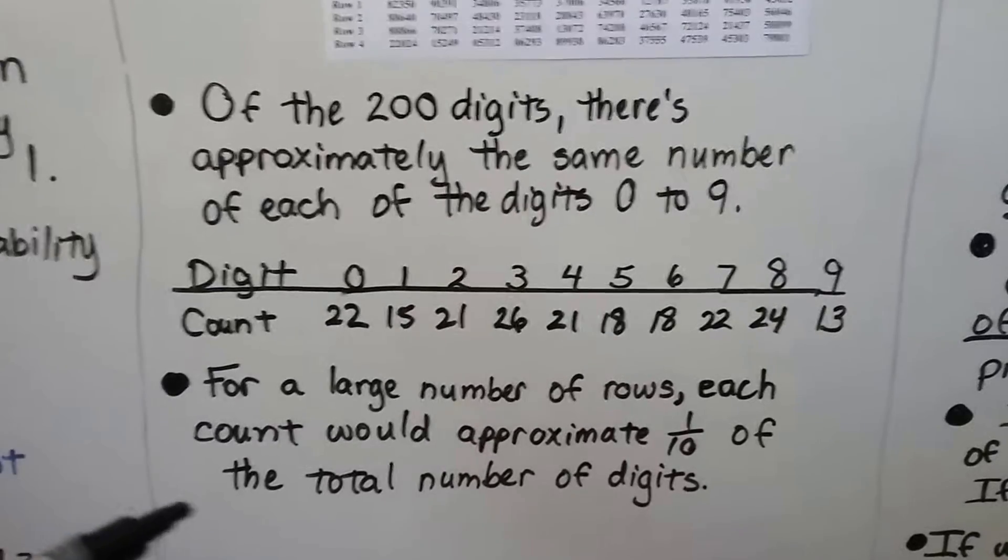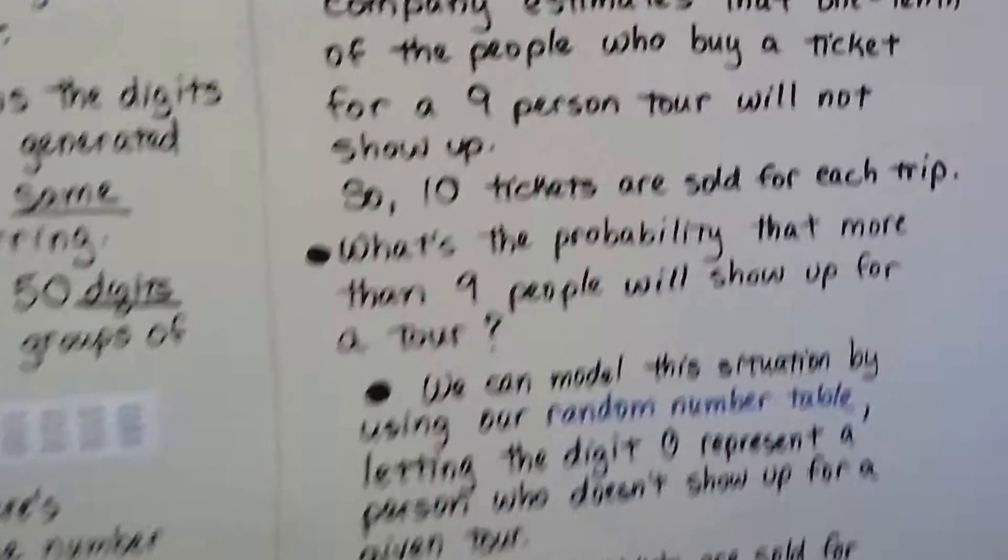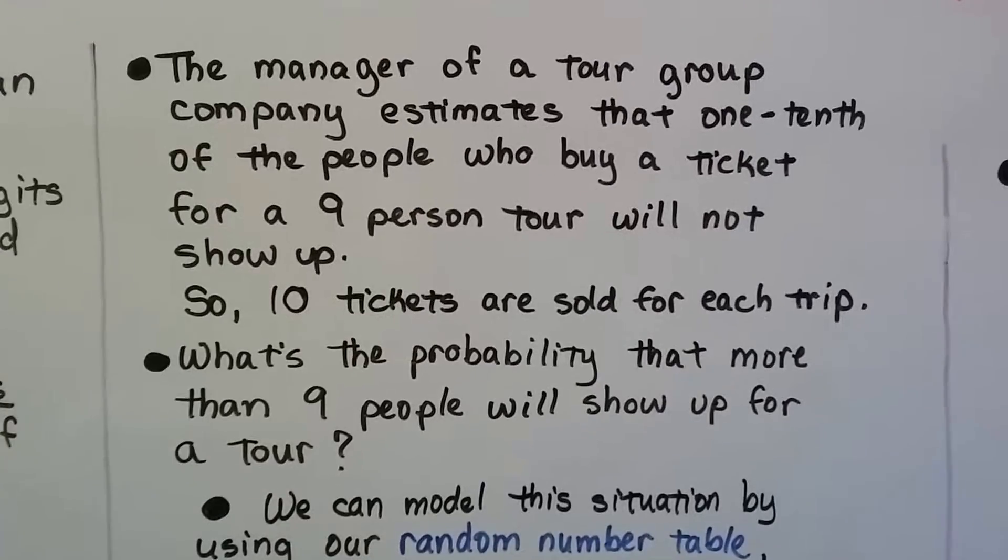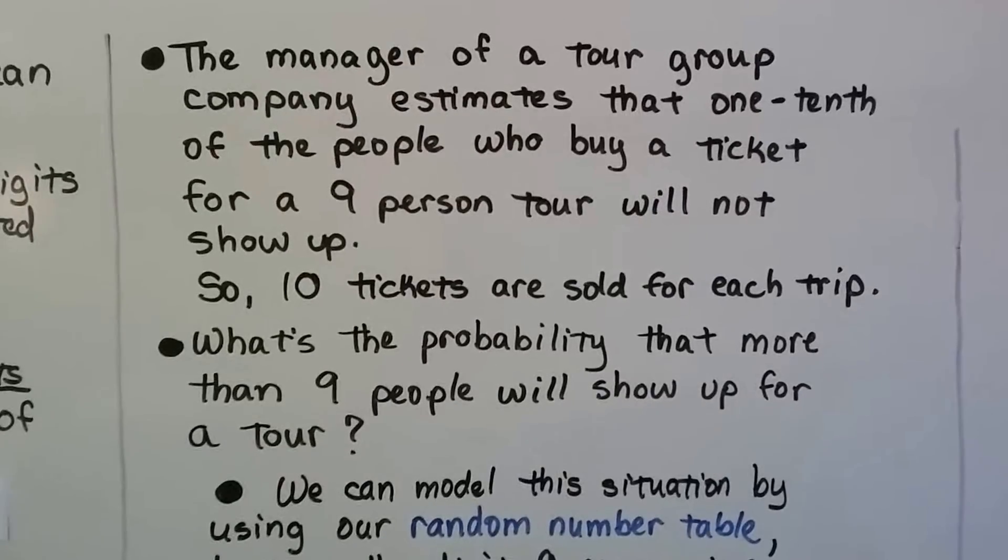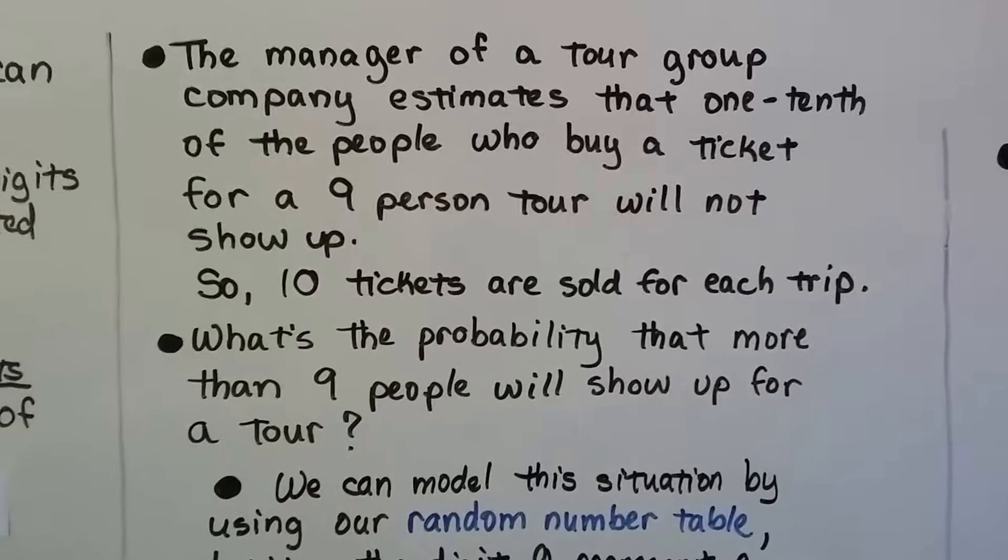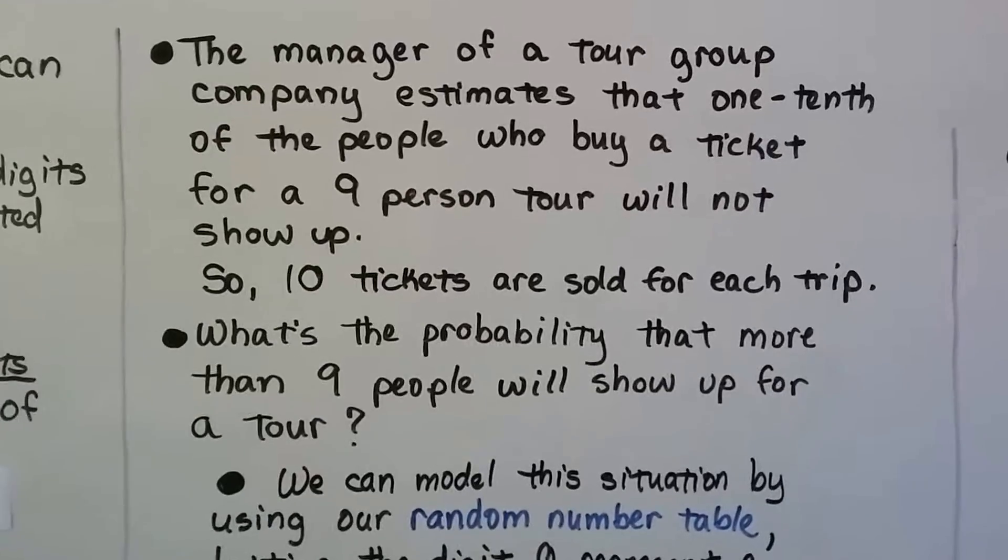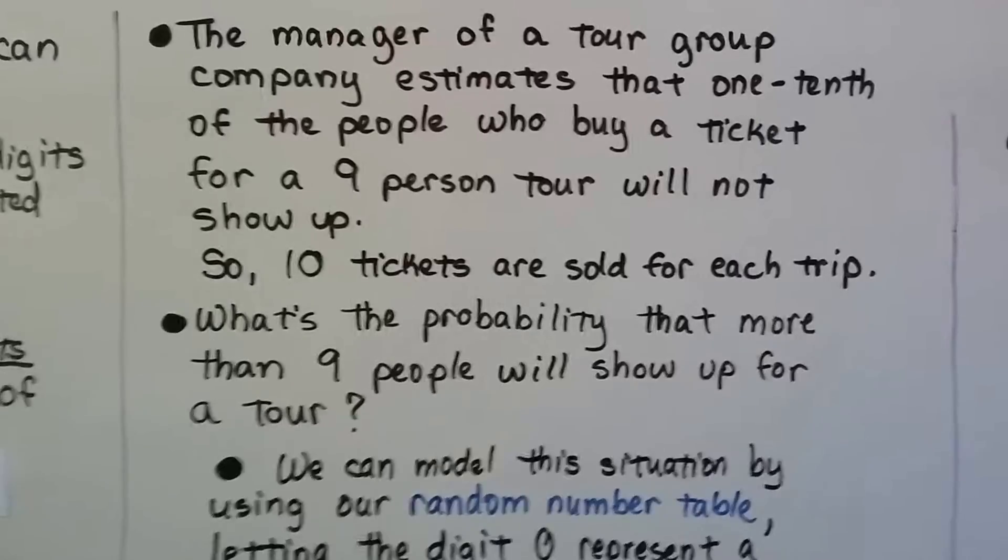So if you have a lot of rows, like 20, 30, 40, 50, whatever. So here's our first example. The manager of a tour group company estimates that 1 tenth of the people who buy a ticket for a 9-person tour will not show up. So 10 tickets are sold for each trip. That way, if one doesn't show up, he's got his 9 people. What's the probability that more than 9 people will show up for a tour?